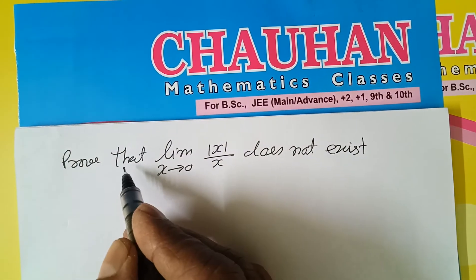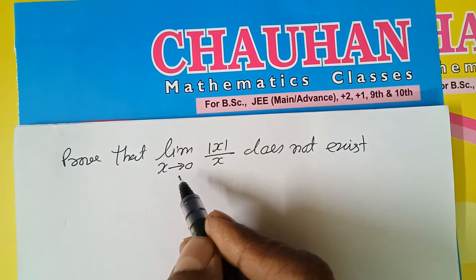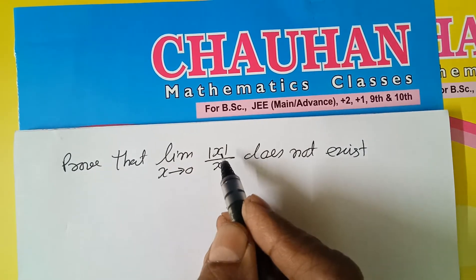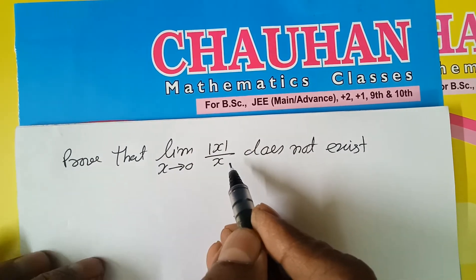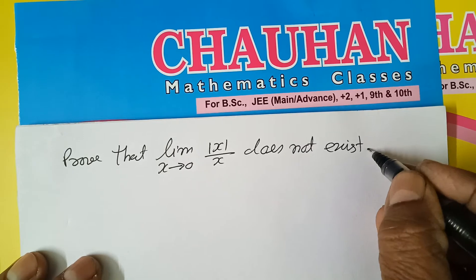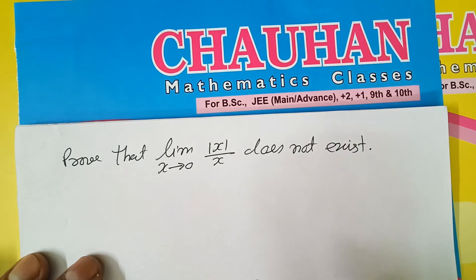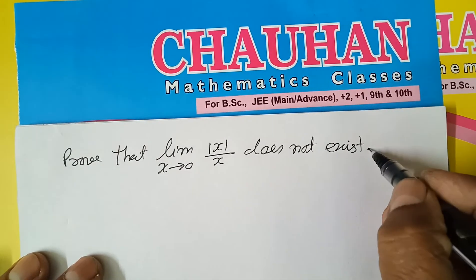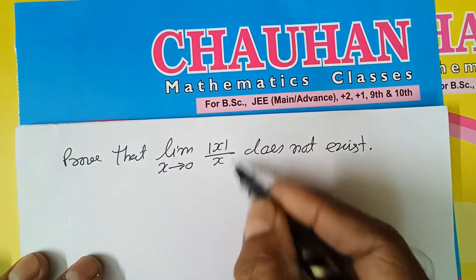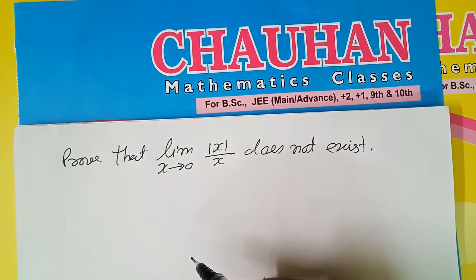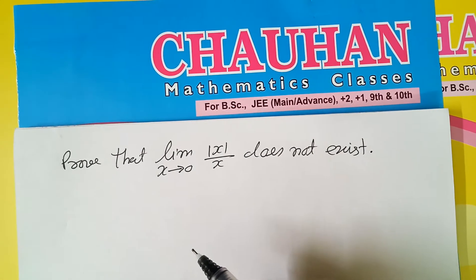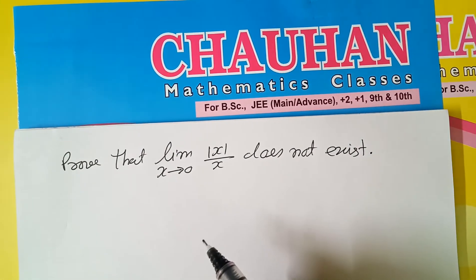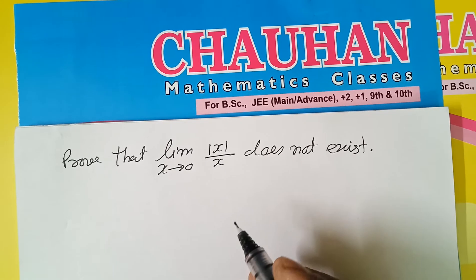Prove that limit x tends to 0, mod x by x does not exist. So, let us prove that this limit does not exist. For non-existence of limits, we will generally use the Cauchy criterion.